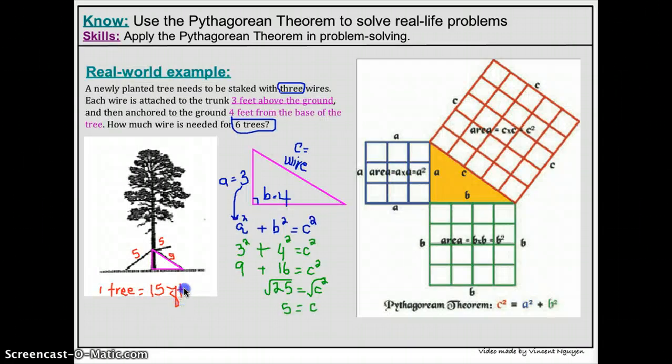So if I have six trees, I will have to multiply that by six. And you know, if you do your math correctly, six times five is 30. Write the zero, remember the three. Six times one is six, plus three is nine. So you're going to need a total of 90 feet of wires.